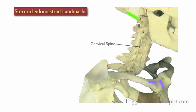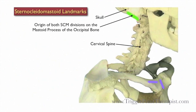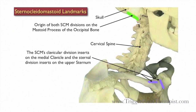Here are the landmarks for the SCM. You have the cervical spine and the skull. The origin of both SCM divisions is on the mastoid process of the occipital bone. The clavicular division of the SCM inserts on the medial clavicle, and the sternal division inserts on the upper sternum.